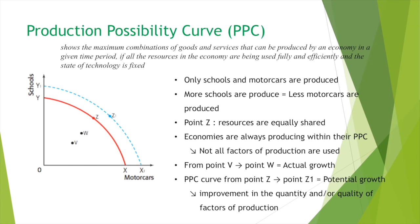The first economic model we're going to learn is the Production Possibility Curve, often called the PPC curve. The PPC curve shows the maximum combinations of goods and services that can be produced by an economy in a given time period, if all resources in the economy are being used fully and efficiently, and the state of technology is fixed.